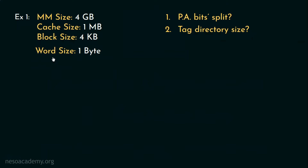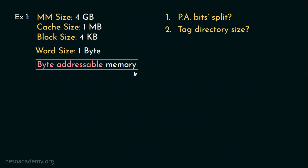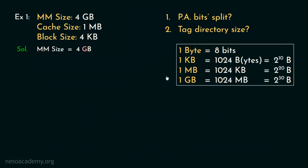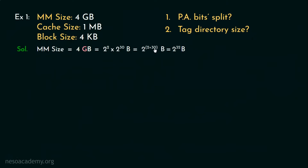When the word size is 1 byte, we call the memory a byte addressable memory. The main memory size is given as 4GB and the memory is byte addressable, so we need to convert 4GB in terms of bytes. 1KB is 2 to the power 10 bytes, 1MB is 2 to the power 20 bytes, and 1GB is 2 to the power 30 bytes. So 4GB turns to 2 squared multiplied by 2 to the power 30 bytes, resulting in 2 to the power 32 bytes — the size of the main memory in terms of bytes.